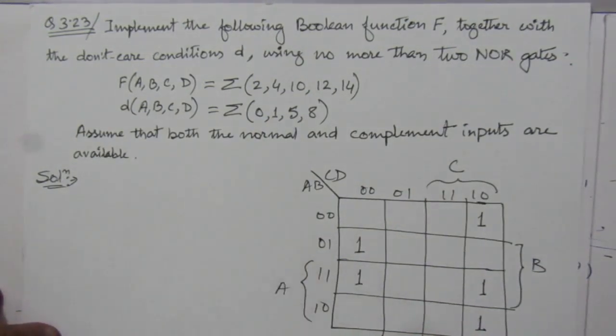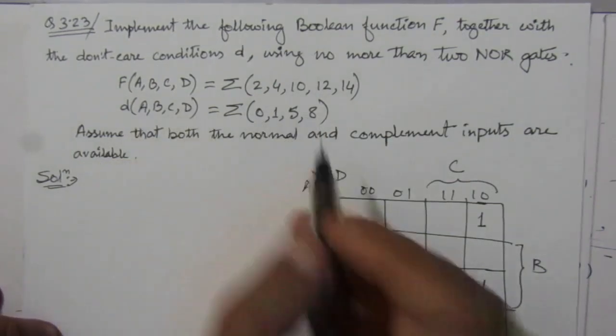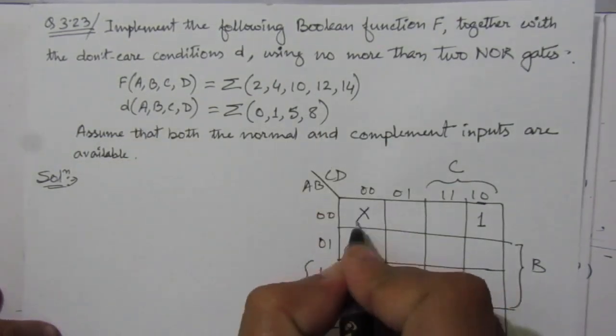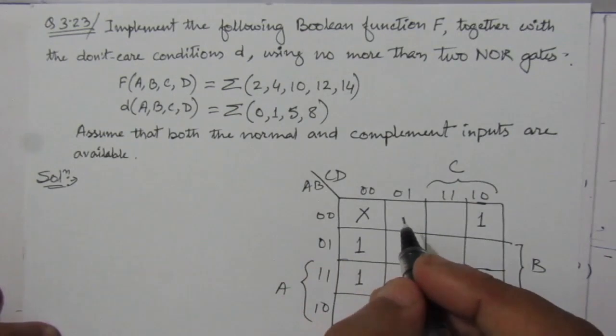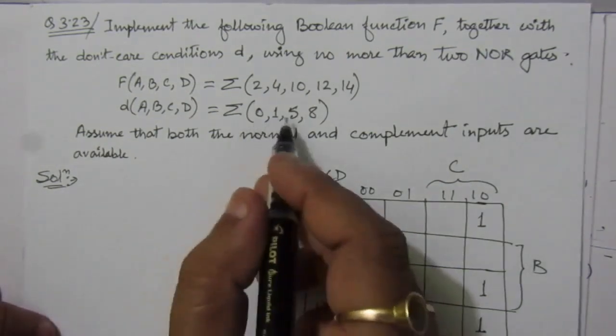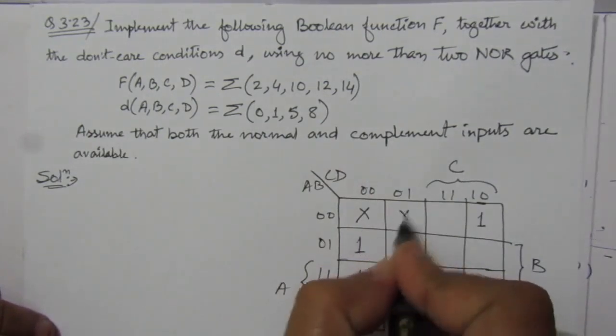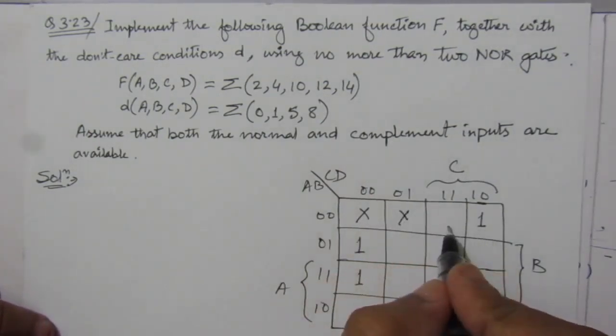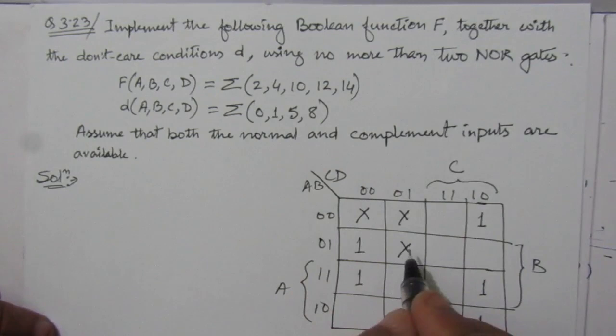Then we also have to put the don't-care conditions: 0, 1, 5, 8. These don't-care conditions means they can be either 0 as well as 1. That means we can combine these don't-care conditions with 0 as well as 1. So we place crosses at positions 0, 1, 5, and 8.